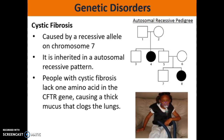Hey everybody, today I want to talk about a few different types of genetic disorders. The first disorder I want to talk about is Cystic Fibrosis. Cystic Fibrosis is caused by a recessive allele on chromosome 7, therefore it's an autosomal disease, not sex-linked, so it affects both males and females to the same extent.